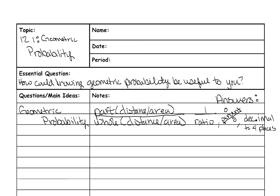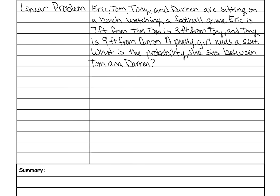Now I want to show you an example of a linear geometric probability problem. Here's the situation. It says Eric, Tom, Tony, and Darren are sitting on a bench watching a football game. Eric is seven feet from Tom, Tom is three feet from Tony, and Tony is nine feet from Darren. A pretty girl needs a seat. What is the probability she sits between Tom and Darren?